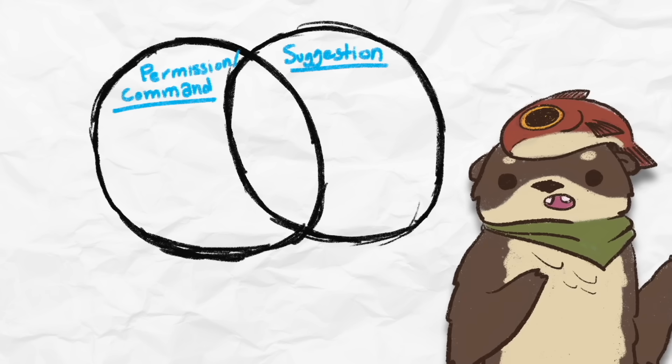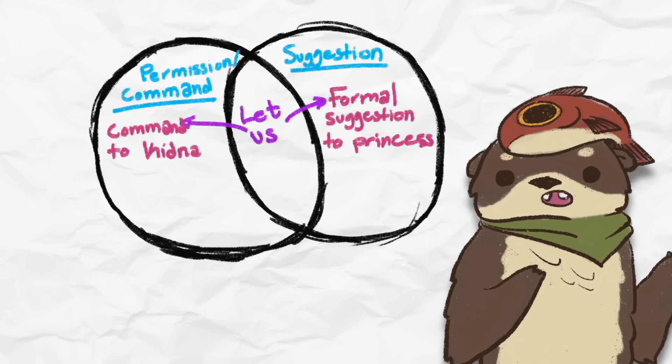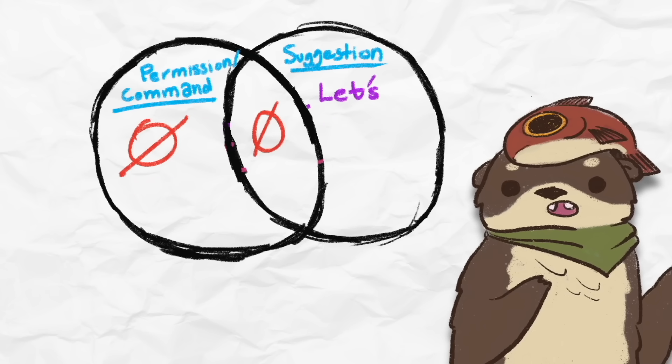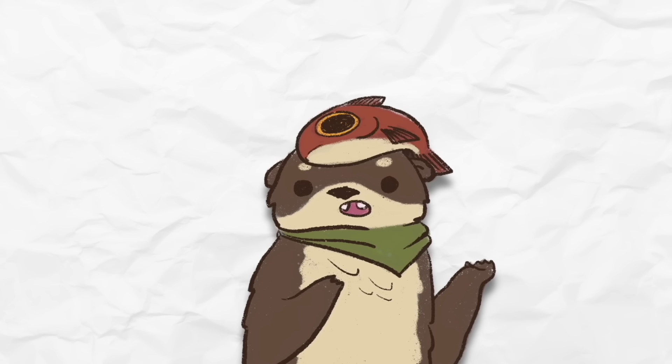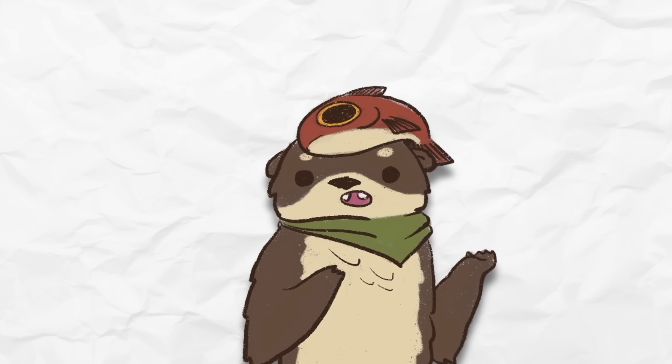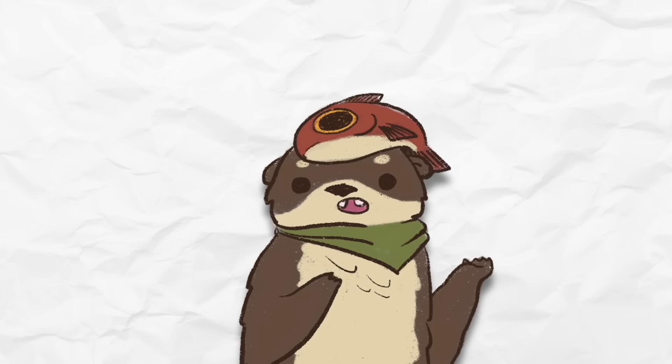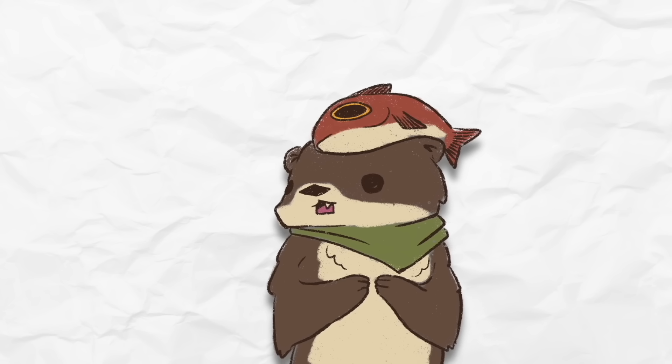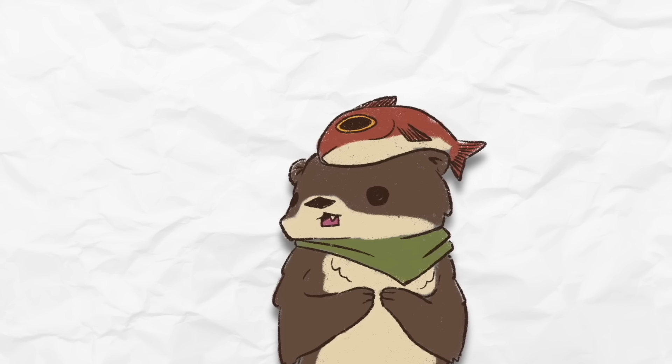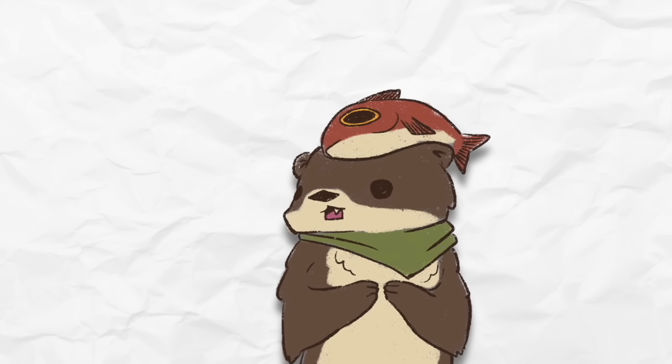It seems that the phrase let us can serve two functions, asking for permission and giving a suggestion. For example, let us go can be asking for permission, like in a kidnapper scenario, but also it can be a formal suggestion, like imagine a prince telling a princess let us go. Here, he isn't asking permission, he's giving a suggestion to the princess. Meanwhile, the contraction let's can only be used for suggestions, but never to ask for permission.